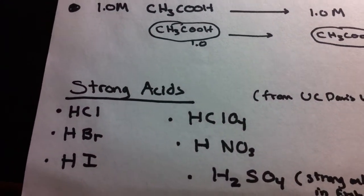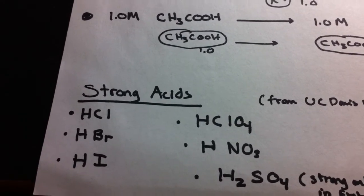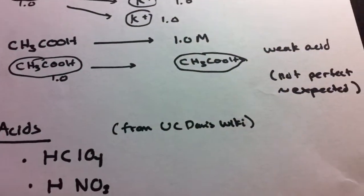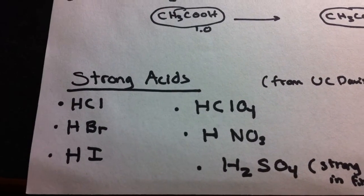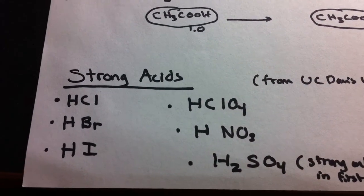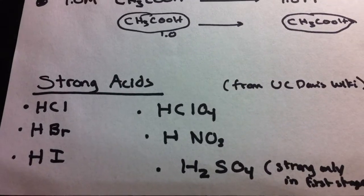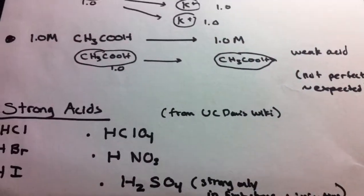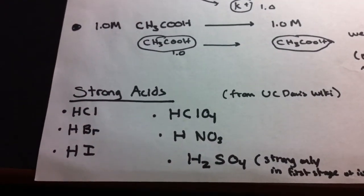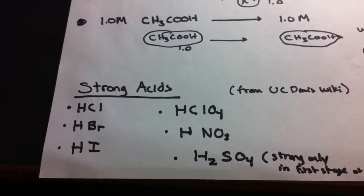As for which acids are strong and weak, we have a list here from the UC Davis Chem Wiki of strong acids. This includes HCl, HBr, HI, HClO4, HNO3, and H2SO4. If they aren't included in this list, just assume them to be weak.